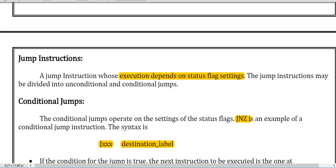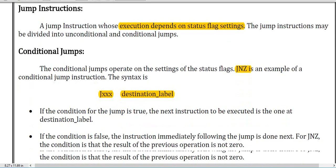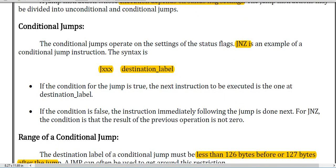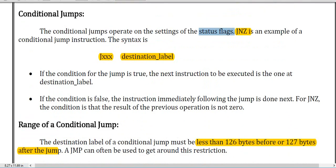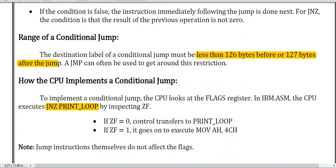We have already discussed status flags and control flags in our previous lecture. Now, a conditional jump is called conditional if there is any condition. The conditional jump operates on the settings of the status flag. Here, JNZ means jump on not zero, so this is also a conditional jump.